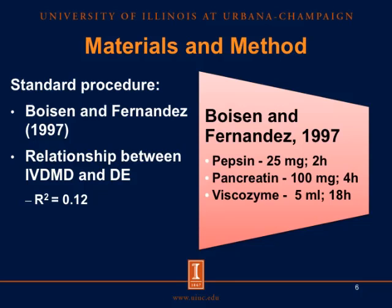We obtained in vitro dry matter disappearance values for all of the 50 corn samples using this procedure. As you can see, the relationship between in vitro dry matter disappearance and the DE of the 50 corn samples was not very good because we only got an R-square of 0.12. Therefore, we decided to conduct additional experiments to come up with in vitro procedures that would correlate well with the concentration of DE in corn.